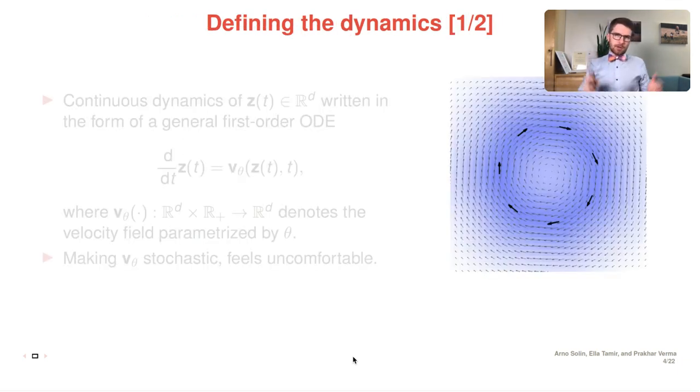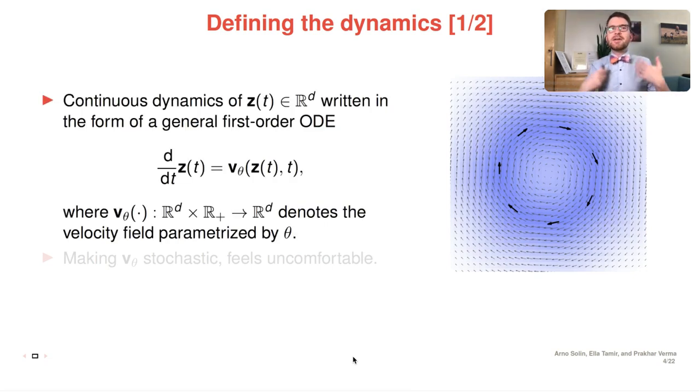The first part of the paper is concerned with defining dynamics in handy ways. And as I mentioned on the previous slide, this is often done in terms of a differential equation. In this model here, the model that actually defines the dynamical behavior is the velocity field function v, parameterized by some parameters theta.